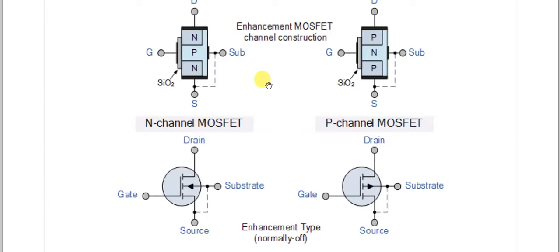Here we have the N-channel MOSFET and the P-channel MOSFET. You can see that the substrate is P-type and the channel through which the main charge carriers flow is N-type. That is why it is called the N-channel MOSFET.